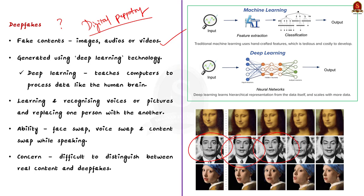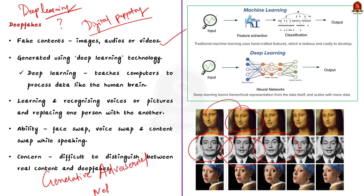The secret ingredient behind deep fakes is a type of artificial intelligence known as deep learning, which helps explain the 'deep' in deep fake. Creating a deep fake involves a special team-up between two AI systems called a generative adversarial network (GAN). One part of the GAN — the generator — is like an artist that creates fake images or videos. The other part — the discriminator — acts like a critic trying to spot which creations are fake. They keep going back and forth, with the artist trying to outsmart the critic by making more convincing fakes, until the fakes are almost indistinguishable from real videos or images.